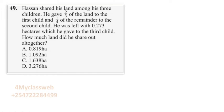Hello, my viewers. As one of the candidates was doing revision at home, he came across a certain question. As I was going through this question, I came to realize that this is a very important question which every candidate must be able to know how to solve. This was question number 49 from a certain past paper. The question reads: a person shared his land among his three children. He gave two-thirds of the land to the first child and a quarter of the remainder to the second child. He was left with 0.273 hectares, which he gave to the third child. How much land did he share out altogether? The question requires you to calculate the size of the whole piece of land in hectares.